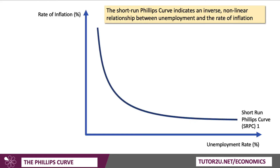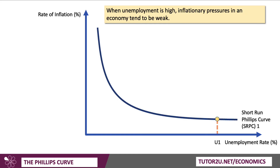Here's the Short Run Phillips Curve as you would normally draw it. It could intersect the x-axis if you wanted to show the economics of deflation, but keep that in mind. The Short Run Phillips Curve indicates an inverse, non-linear relationship between unemployment and the rate of inflation. When unemployment is high at U1 — perhaps more than 10% of the labour force — then inflationary pressures in an economy tend, on the whole, to be fairly weak. We'd expect low inflation when unemployment is high.